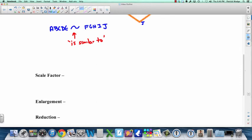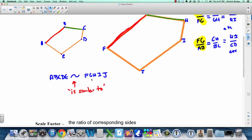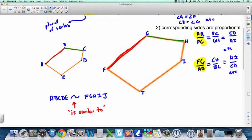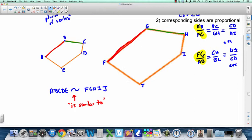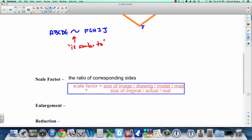Scale factor. Scale factor is the ratio of corresponding sides. Remember when I talked about dividing the length of AB by FG? However much that is, that's what the scale factor is. There's a formula for scale factor. The scale factor equals the size of the image, or the drawing, or the model, or the map, divided by the size of the original object, or the actual thing, or the real thing. Scale factor does not have units. It's just going to be a number.